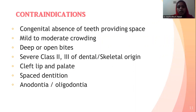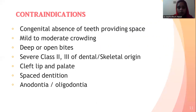Contraindications for serial extraction: Since the indication is severe crowding, the contraindication will be spacing. So serial extraction is not indicated for a spaced dentition, and also if there is congenital absence of teeth that provides space. Serial extraction is indicated only in severe crowding, so mild to moderate crowding is also a contraindication.